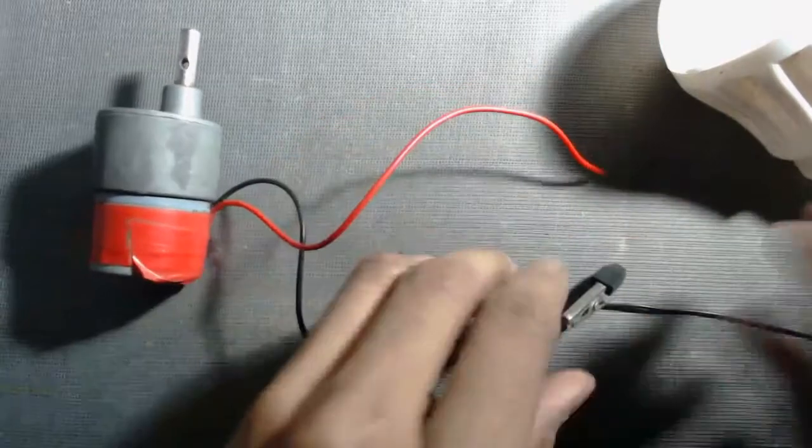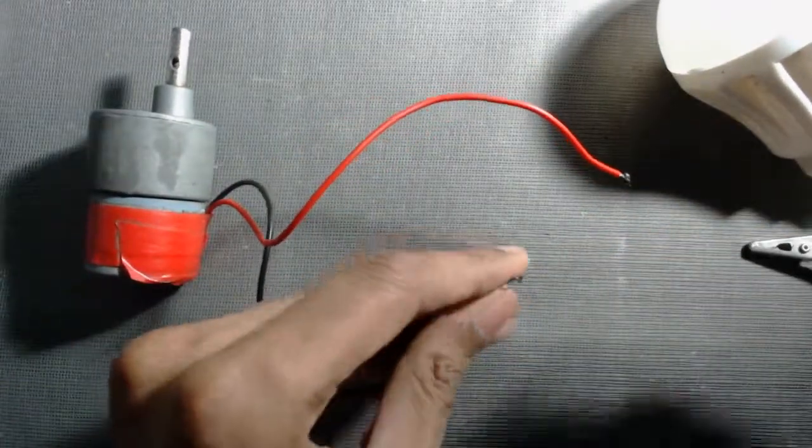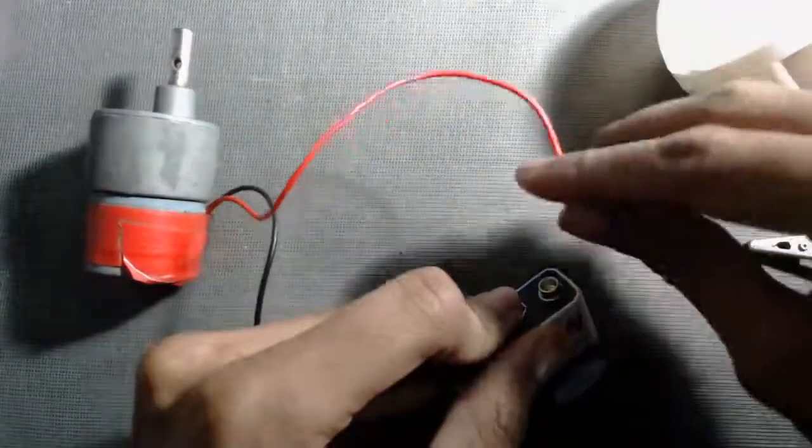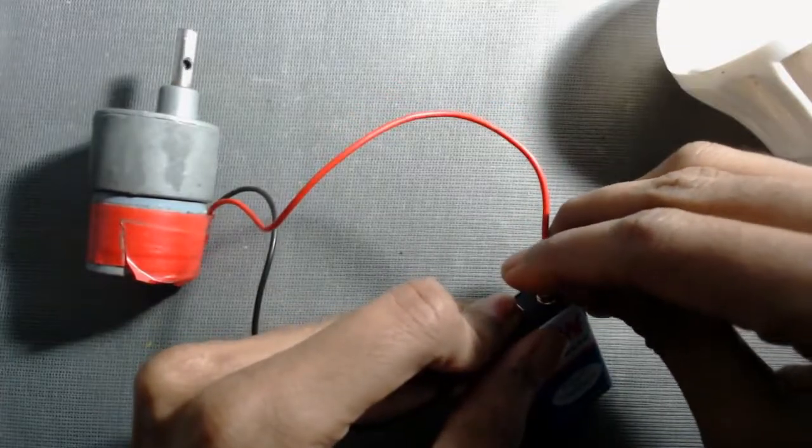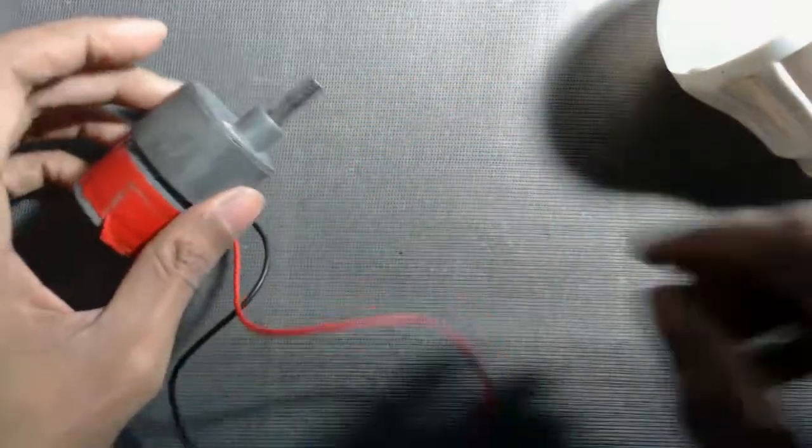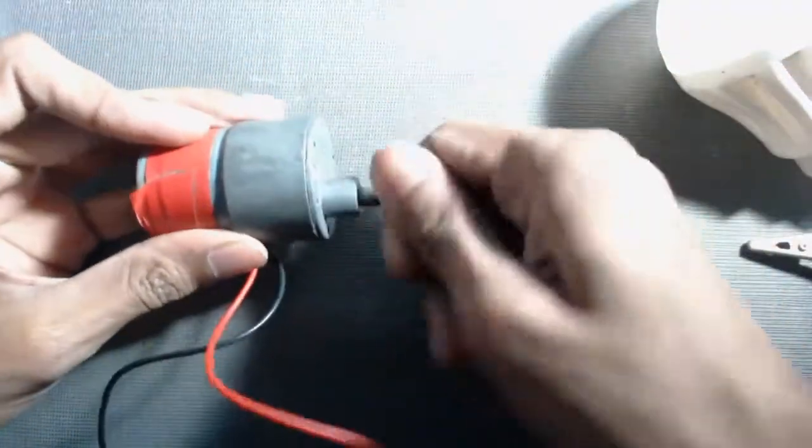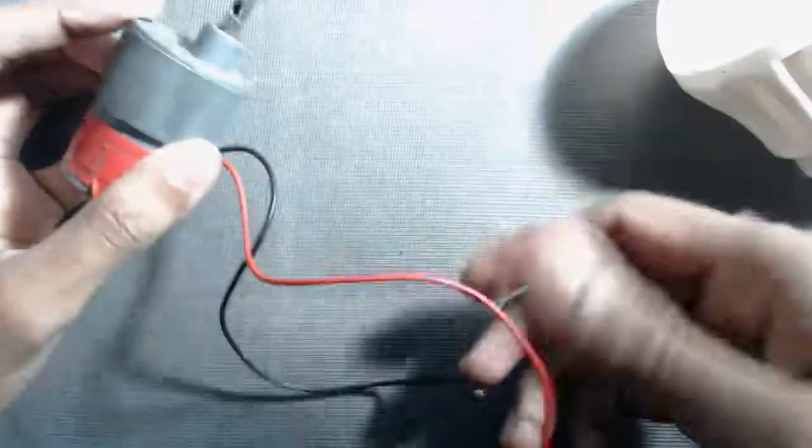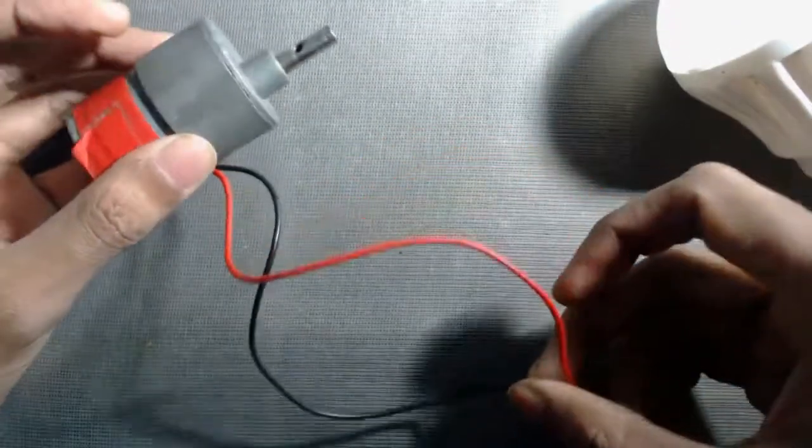If I apply a voltage across its terminals, then this acts as a motor. And if I physically rotate the shaft of this motor, then a voltage is generated across its terminals and this acts as a generator.